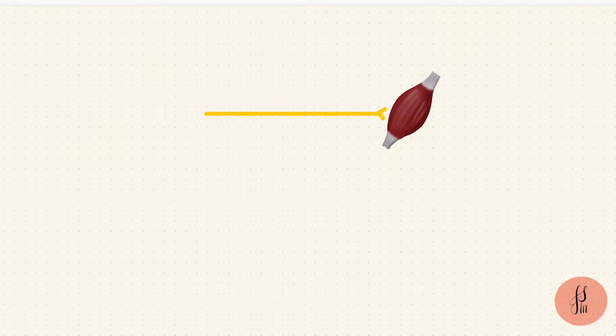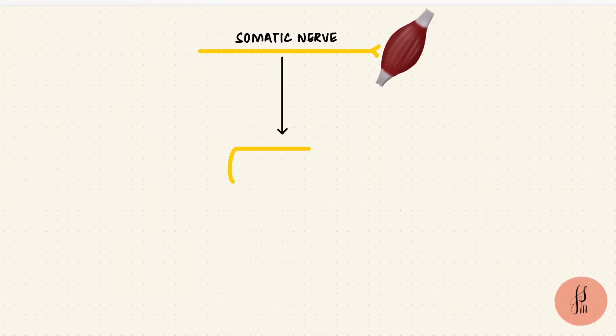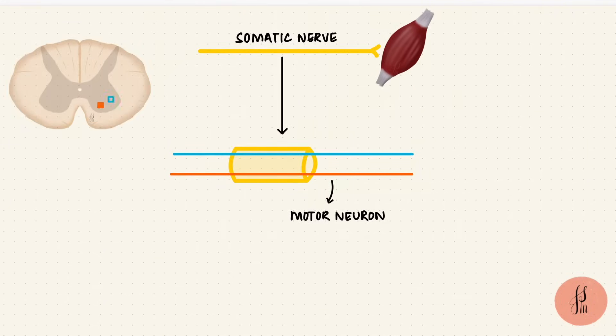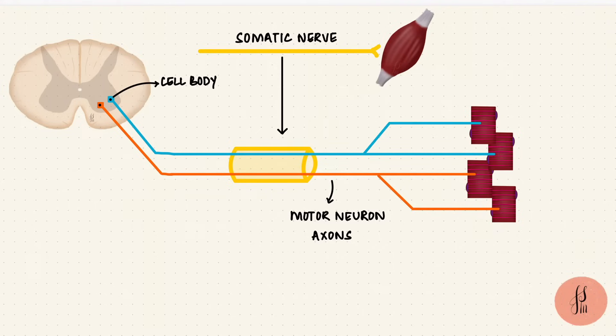Skeletal muscles are supplied by somatic nerves. They are motor neurons. Each motor neuron has its cell body in the ventral horn of the spinal cord. These axons extend over long distances to reach the muscle fibers.